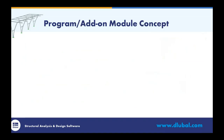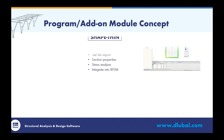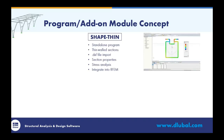I want to quickly go over the program and add-on module concept for those who may not be familiar. The first program is ShapeThin — a standalone program for thin-walled sections where we can manually create sections directly within the program. We can create built-up sections using sections from the ADM or AISC standard, or we can import a DXF file, which is what we'll be utilizing today. Section properties are calculated, and you also have the ability to run a basic stress analysis directly within the program.